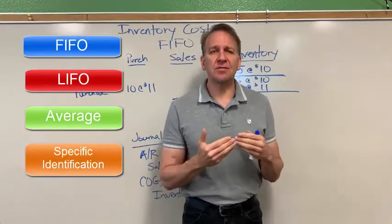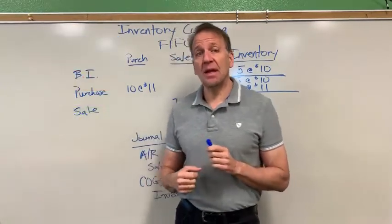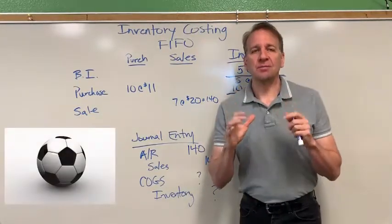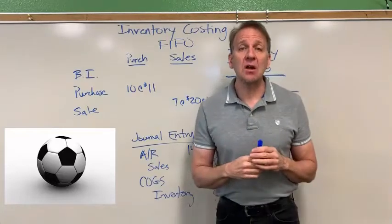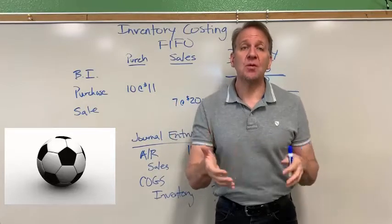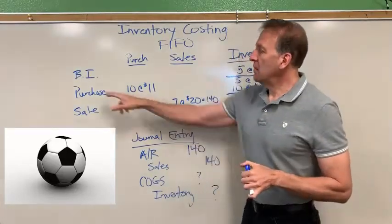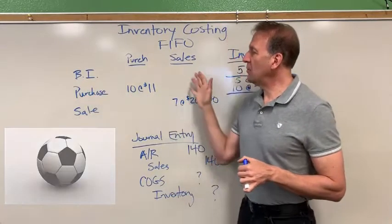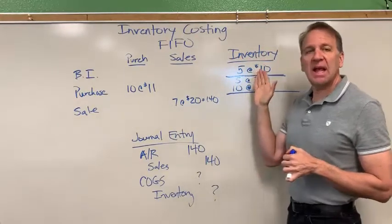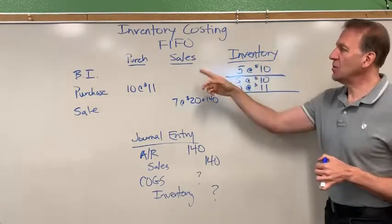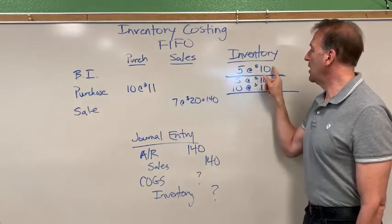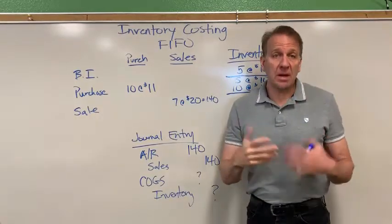So let's introduce you to this before we get started with the actual FIFO method. I have an example here on the board where we're selling soccer balls. They sell for $20 each. We don't manufacture them — we buy them from somebody else and then turn around and sell them. BI stands for beginning inventory. In my spreadsheet, I've got purchases, sales, and ending inventory. In beginning inventory, I'm starting with five soccer balls that I paid $10 for, so I spent a total of $50.